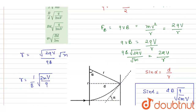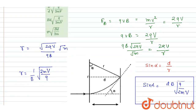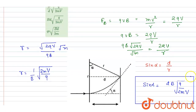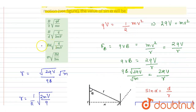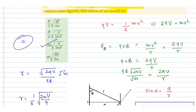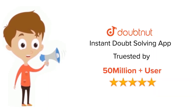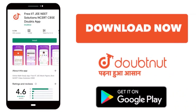Looking at the options, sin(alpha) = Bd√(q/(2mV)), so option C is the correct answer. Thank you. For class 6 to 12, IIT JEE and NEET level, trusted by more than 5 crore students — download DoubtNet today.